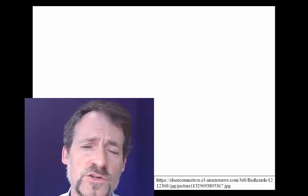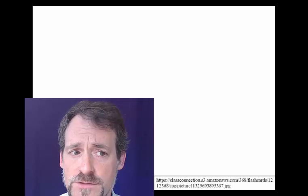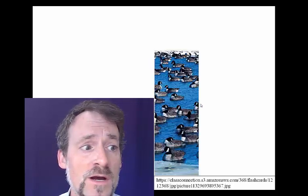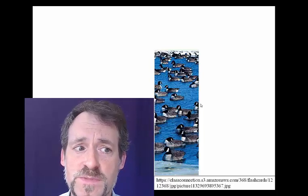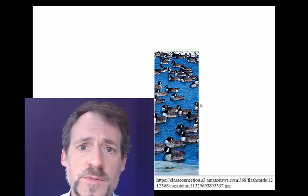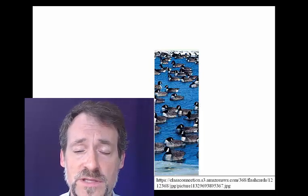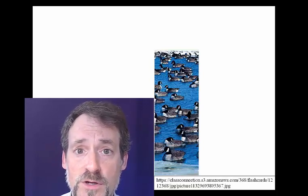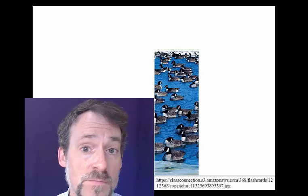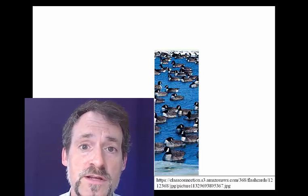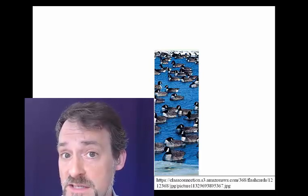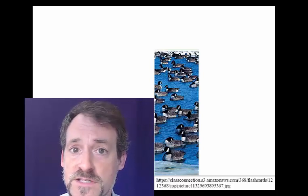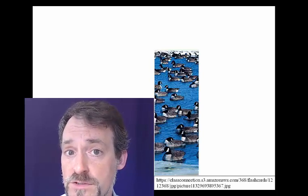Ecologists usually think about ecology on one of three different levels. On one level, you might have a group of organisms of a particular species living at the same time in more or less the same place. It makes sense to think about this as a single group because these are the individuals that might be able to breed with one another, interact with one another, compete with one another for food or territory, and rely on the same food source.